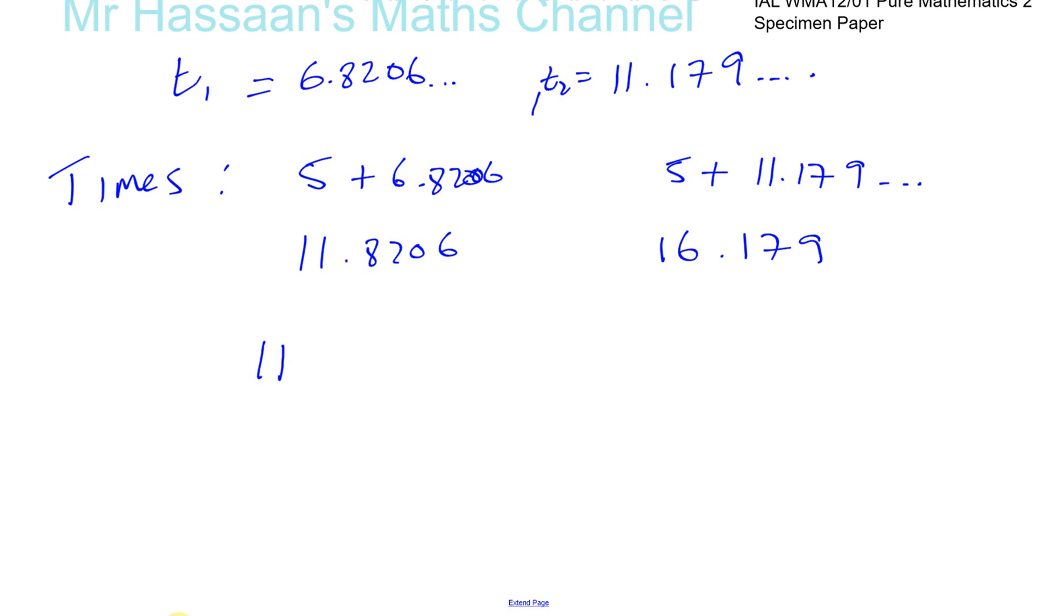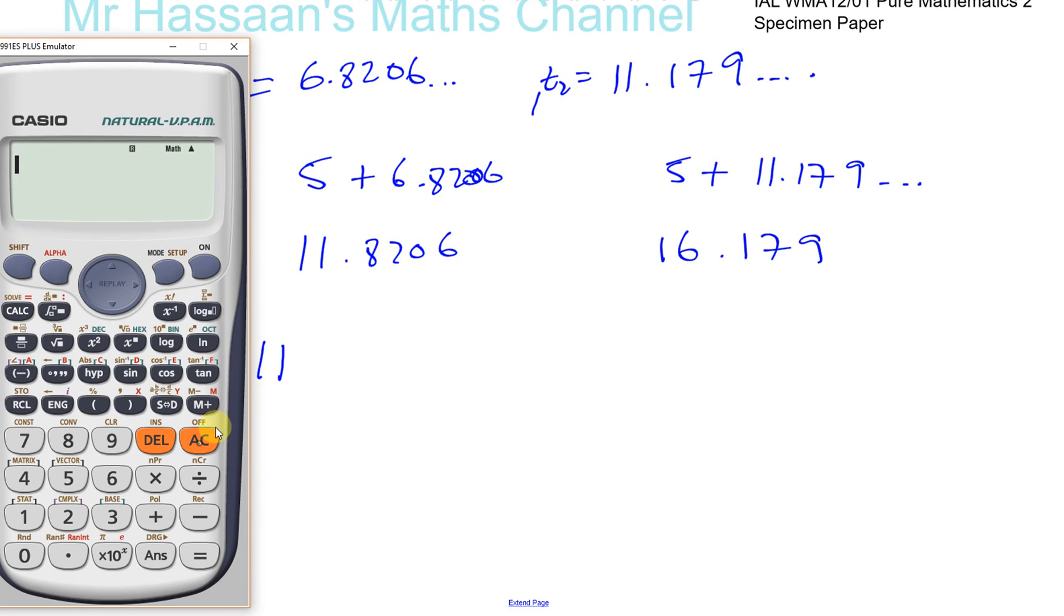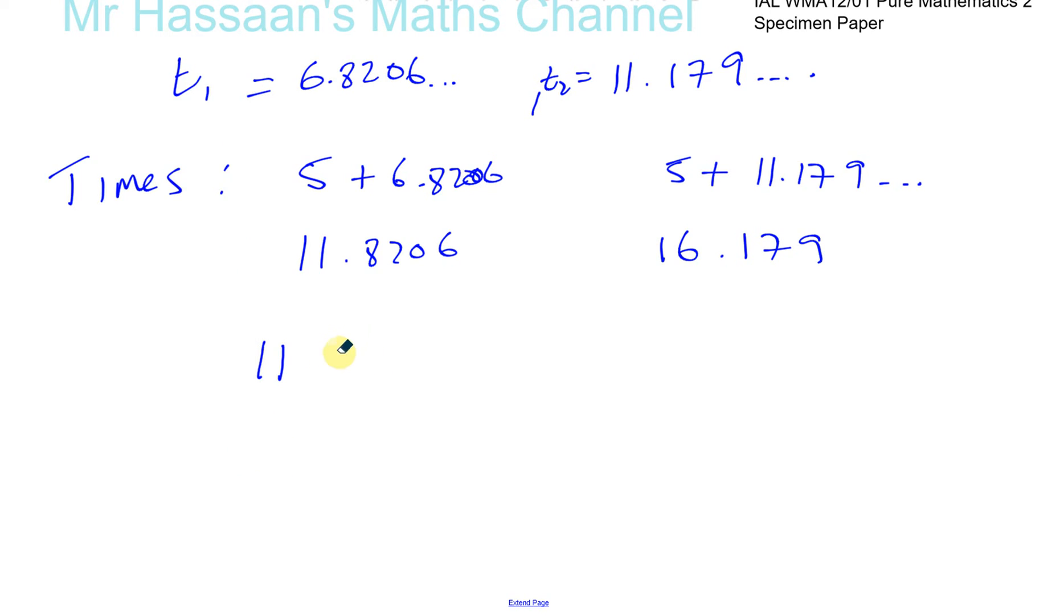So I want to change this into time. That's 11 hours. And how many minutes? We can just multiply 0.8206 times 60. That will convert that into minutes. That's going to be 11.49.